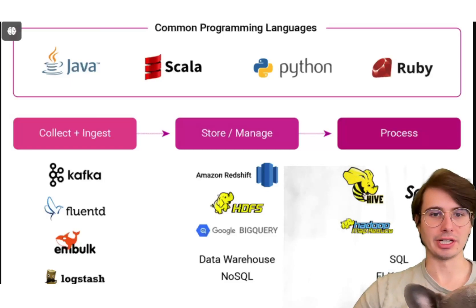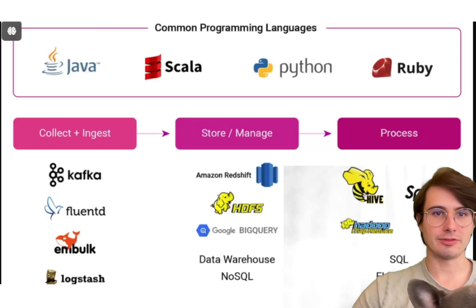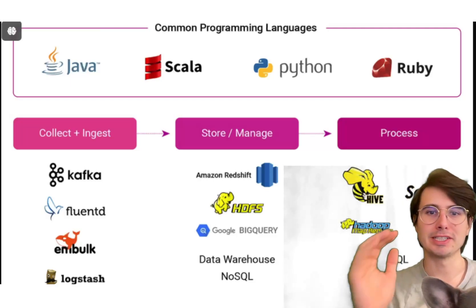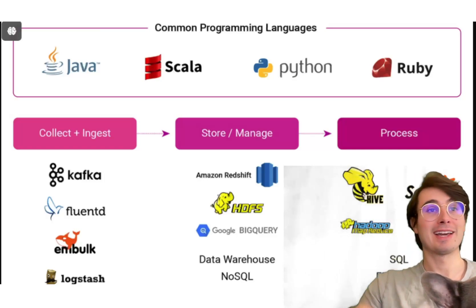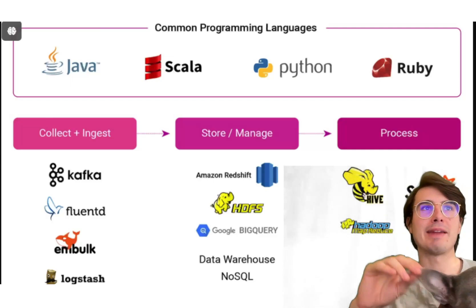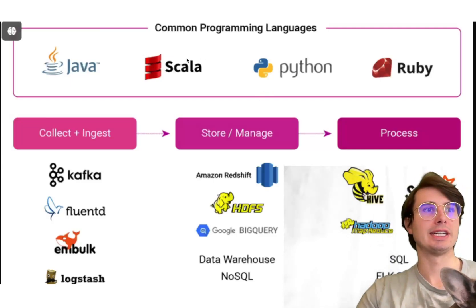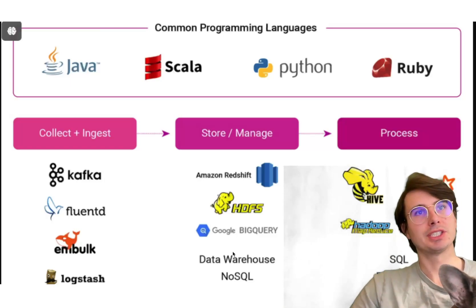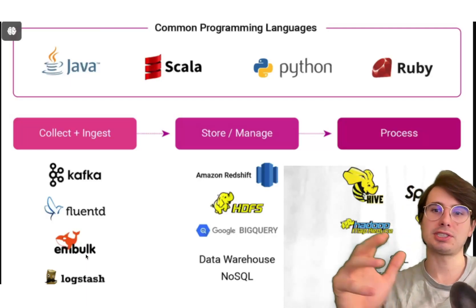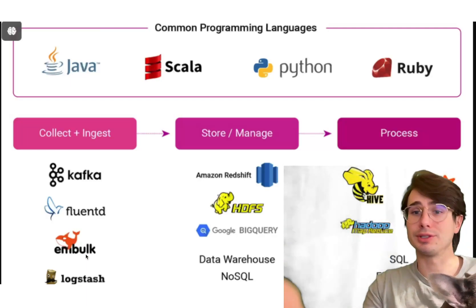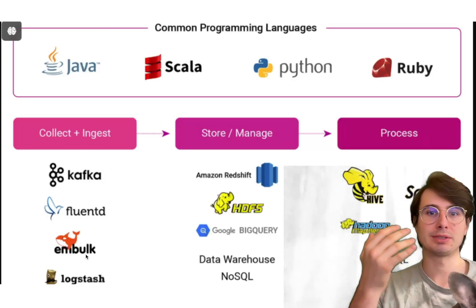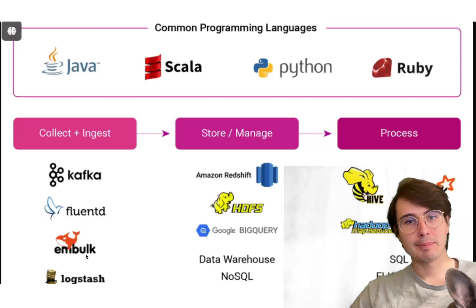The next step in your programming journey is learning which programming languages are best for which tasks. Primarily, you're going to need to know Python and SQL. Begin by building a really solid foundation in both — you'll need SQL to interact with pretty much any database, so building that foundation is critical to being a data engineer.